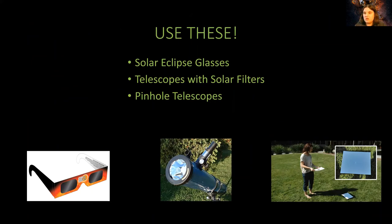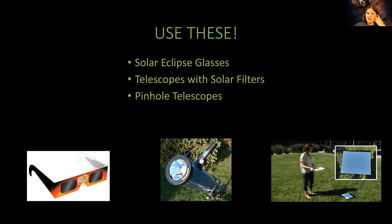Here are some things you can use to observe a solar eclipse. Get good quality solar eclipse glasses — make sure there are no dings and that they come from a legitimate source. You can also use a telescope with solar filters. If you're going on the cheap end, consider a pinhole projector: take a sheet of paper, create a small hole in it, then put another sheet of paper on the ground, line them up so you can see the sun through the pinhole, and watch the solar eclipse projected through that little hole.